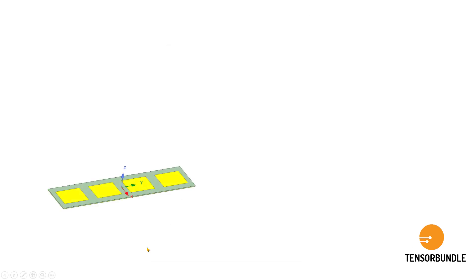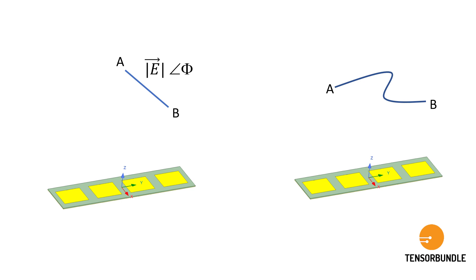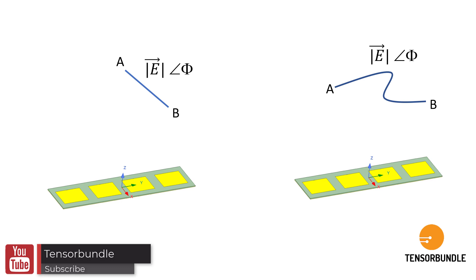Let's consider this antenna array. This is a 1 by 4 antenna, and what you want to do is sample the electric field along this line of interest AB. This is your observation line along which you want to find out the magnitude and the phase of the electric field. Now imagine this straight line AB could be a curve — it could be a curve like this one, and you want to sample the electric field's magnitude and phase on each point along this curve AB. So these are two different scenarios that I'm going to demonstrate in this tutorial — for a straight line and also for a curvy line.